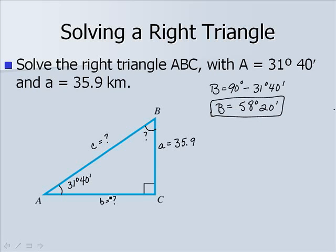Now, let's find side b. We know that the tangent of the angle we just found, angle B, 58 degrees 20 minutes, would be the opposite side, which is side b, over the adjacent side, which is side a, or 35.9. To solve for b, we're going to multiply both sides by 35.9.